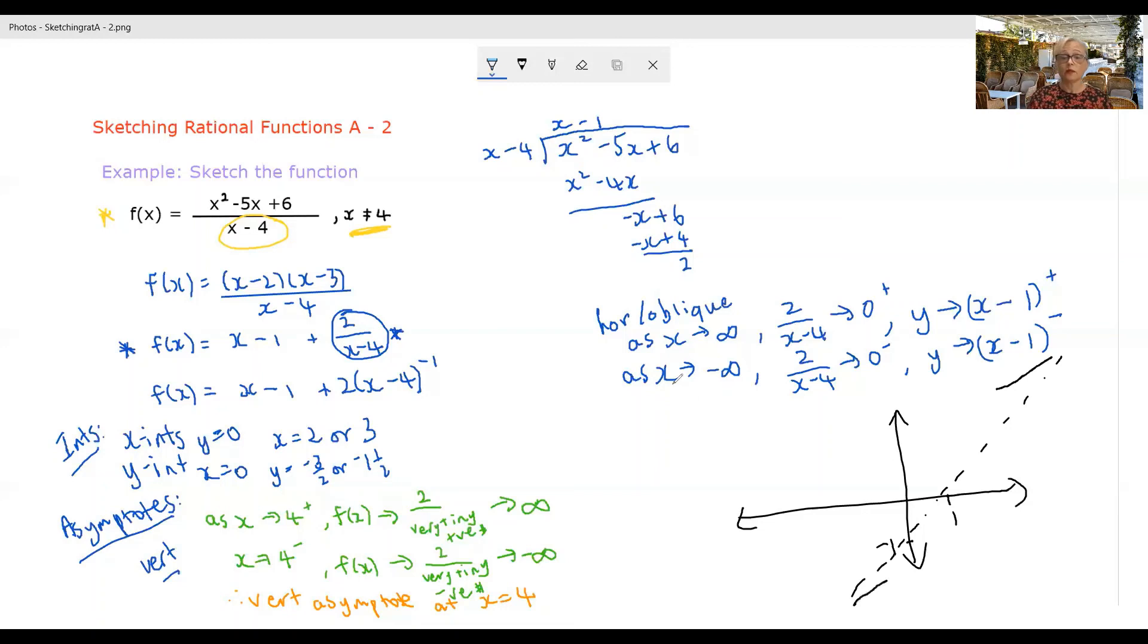So again, we could say, and of course that's not a horizontal line, it's an oblique line. So we'd say an oblique asymptote at y equals x minus one.